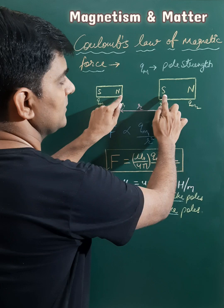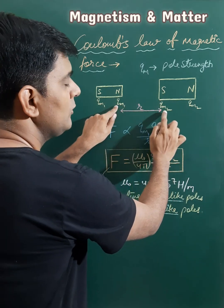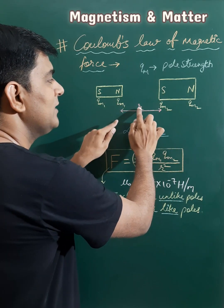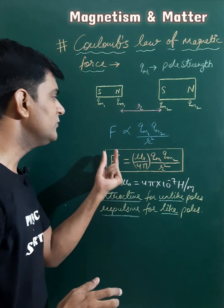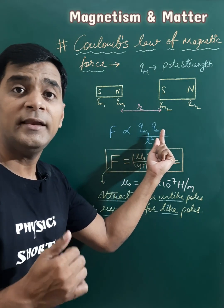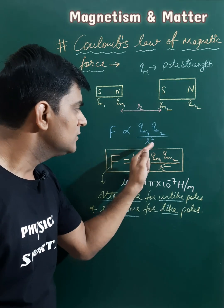Their strengths are qm1 and qm2, and the separation between them is small r. In this situation, this force is directly proportional to qm1 times qm2 and inversely proportional to r square.